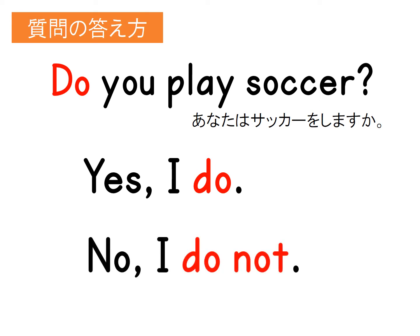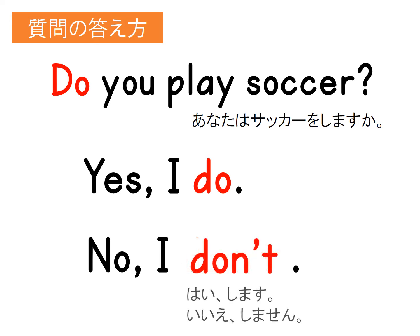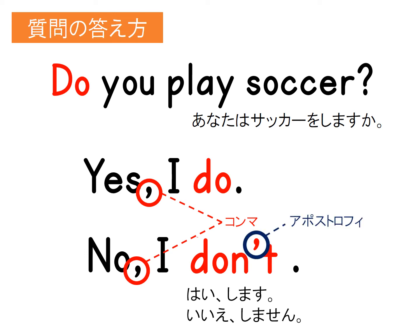「Do you...?」で聞かれたとき、はいと答えるには「Yes, I do.」、いいえと答えるには「No, I don't.」を使います。「don't」は「do not」を縮めた短縮形です。YESとNOの後にある記号をコンマと言います。日本語の「点」にあたります。書くときに忘れがちになるので気をつけましょう。また、短縮形「don't」を使うときには縮めましたよという印のアポストロフィーをつけます。コンマとアポストロフィーは似ていますが微妙に位置が違うので注意が必要です。